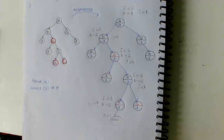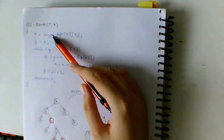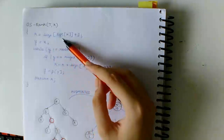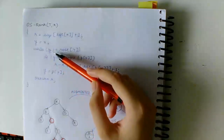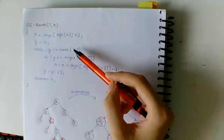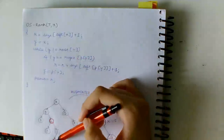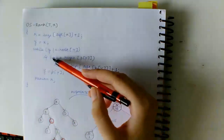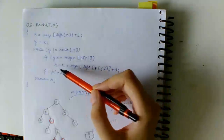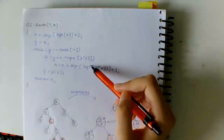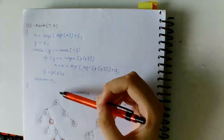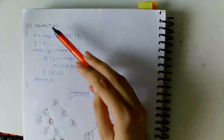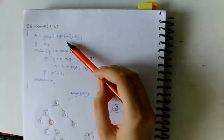Now we look at the rank operation on the same question using the OS-RANK algorithm. We start with node x and find its r value, which equals the size of its left subtree plus 1. We store the current node in variable y and traverse upward until y becomes the root. If y is the right child of its parent, r is updated to the previous r plus the size of the left subtree of the parent plus 1; then y moves to its parent. At the end we return r, which is the rank of the original node x.